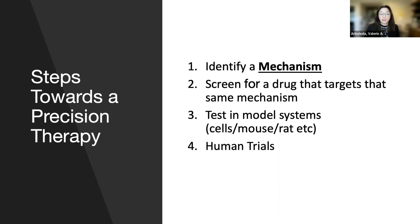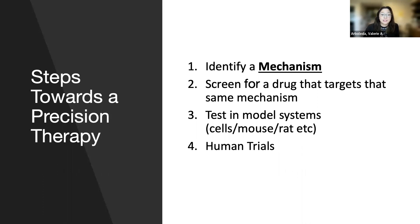Once you have a mechanism, there's a lot you can do around screening for drugs that target that mechanism or downstream mechanisms. You can test certain drugs in model systems, or develop model systems to test a large range of drugs, and then ultimately move this into human trials. But really the first step is the hardest step, because it requires a lot of very specific testing.